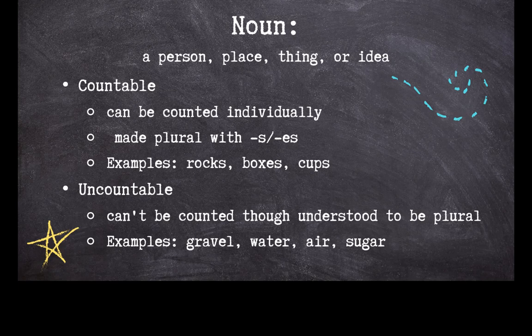Uncountable nouns are understood to be plural, but can't be counted individually. Take gravel, water, air, or sugar, for example. We know each of these things is made up of more than one item — they exist as a collection of things. So we can count pieces of gravel, drops of water, molecules of air, and grains of flour. But the nouns gravel, water, air, and flour themselves aren't countable.